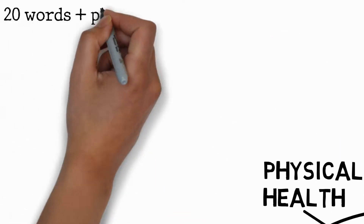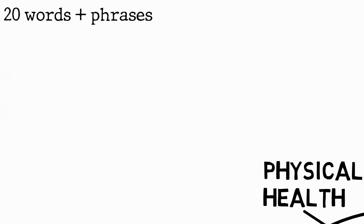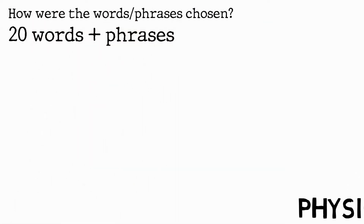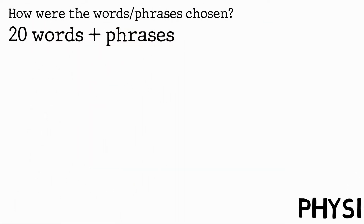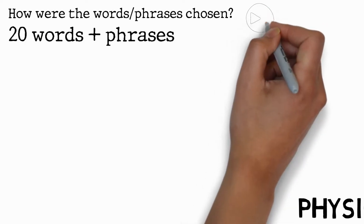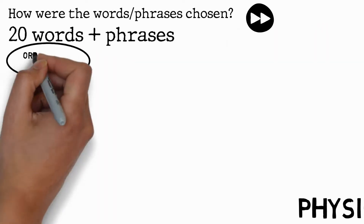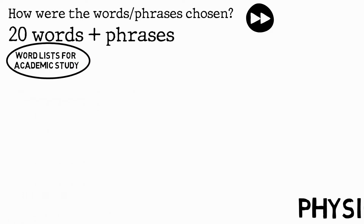We'll see 20 words and phrases in total. As this is the first video in the series, I want to explain the rationale behind choosing the words. If you just want to see the words themselves, skip to the next section. The majority of the words we'll look at come from word lists for academic study.